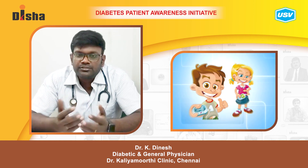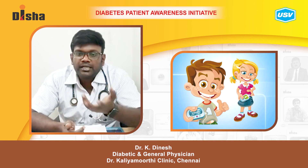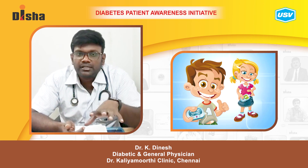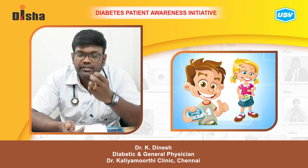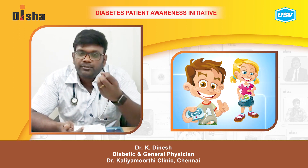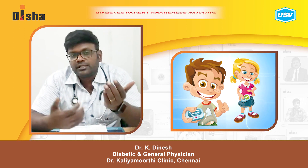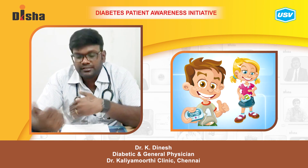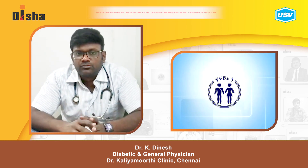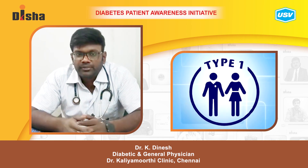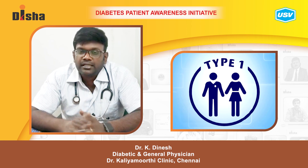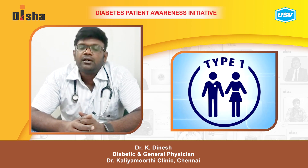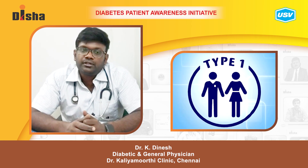These children develop diabetes and some show symptoms very early, maybe from birth, while others develop symptoms in the later stages. So type 1 diabetes is an autoimmune disorder — it occurs because of the autoimmune disorder.